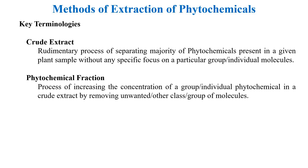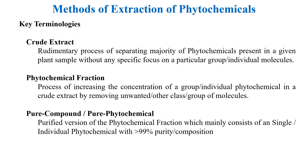Next is a pure compound or pure phytochemical. In this process, a single phytochemical has been purified with greater than 99% purity. This is usually done for analytical and investigative purposes and not for medicinal value, because the yield or quantity of a single compound — take curcumin from turmeric for example — is very meager, less than 1% of the plant material.